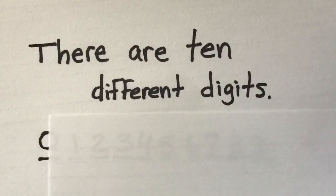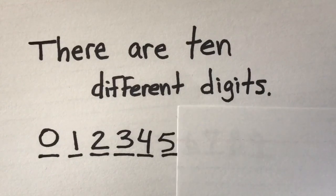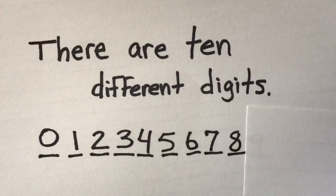There are 10 different digits: 0, 1, 2, 3, 4, 5, 6, 7, 8, and 9.